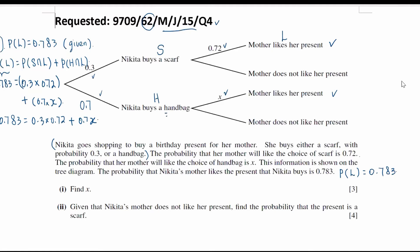To find out 0.7X, let's use the calculator to find out the values. It's going to be 0.783 minus 0.216. And hence, X is going to be this. So answer 0.810. That is the value of X, 0.81.